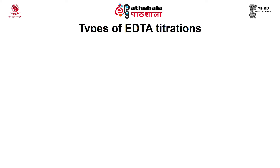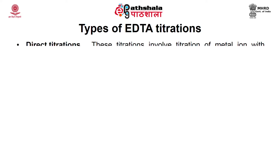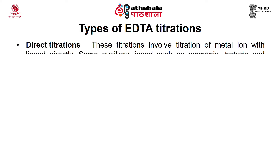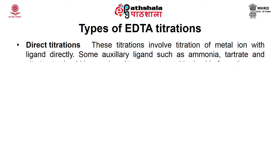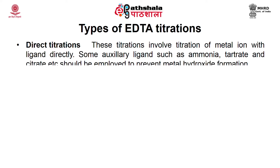Types of EDTA titrations: four different types are generally observed. The first is direct titration, which involves titration of a metal ion with ligand directly. Some auxiliary ligands such as ammonium tartrate and citrate can be employed to prevent the formation of metal hydroxides.